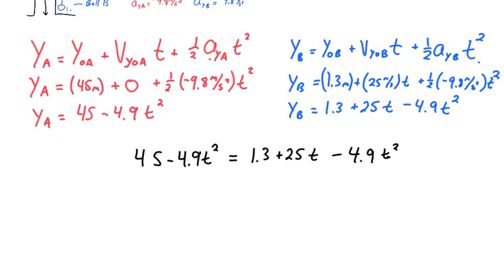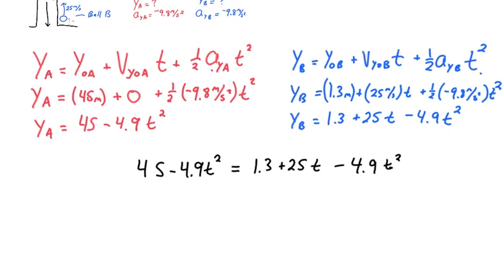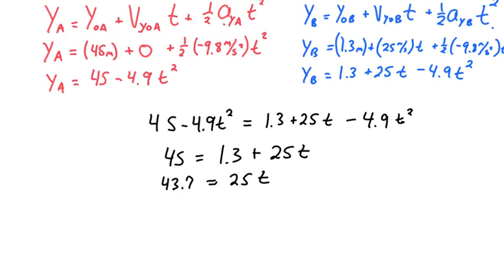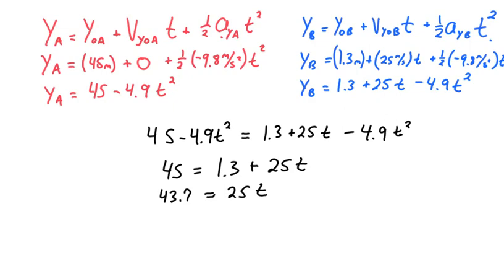I'm going to group like terms together now. So I've got a T squared term on both sides and I've got a constant term on both sides. I'll leave the constant alone for now. Make this 45, add the 4.9 T squared to both sides. That's going to, negative 4.9 plus positive 4.9 T squared is going to be zero and we get the same thing over there. So essentially that term will just drop out. Plus 25 T. I'm going to subtract the 1.3 from both sides. That leaves me with 43.7 on the left side and 25 T on the right side. And then I'll divide both sides by 25, which is going to give me 1.75. The units are going to be seconds for time.